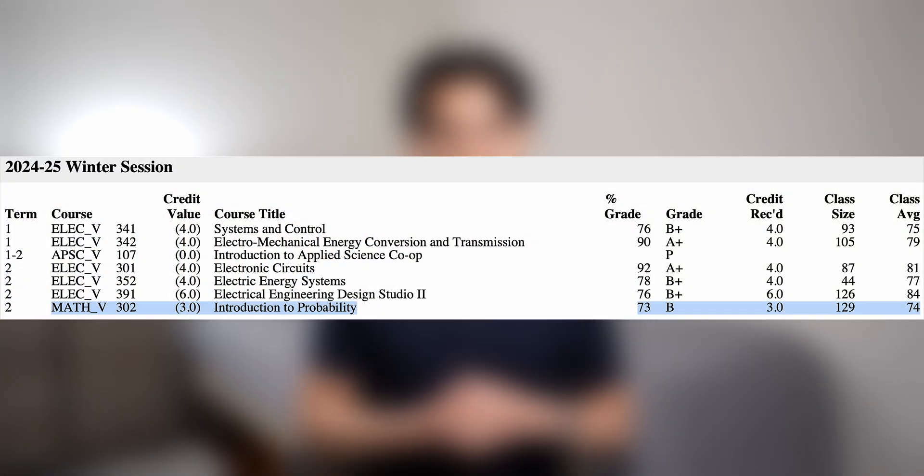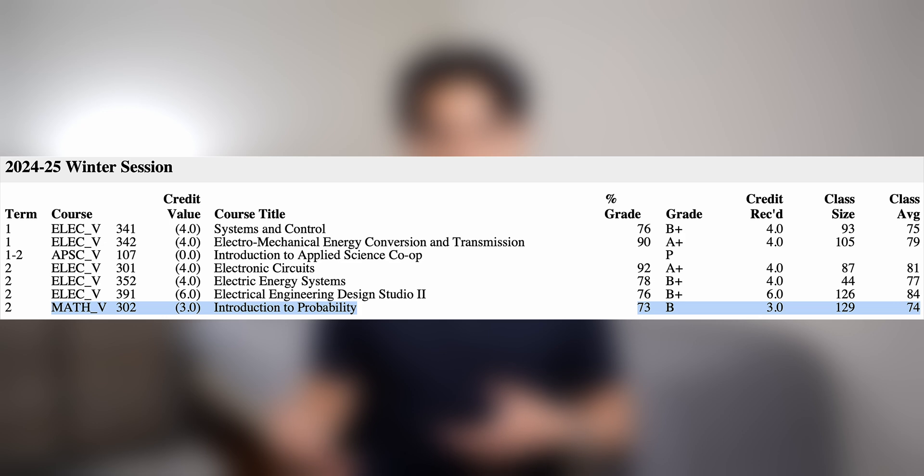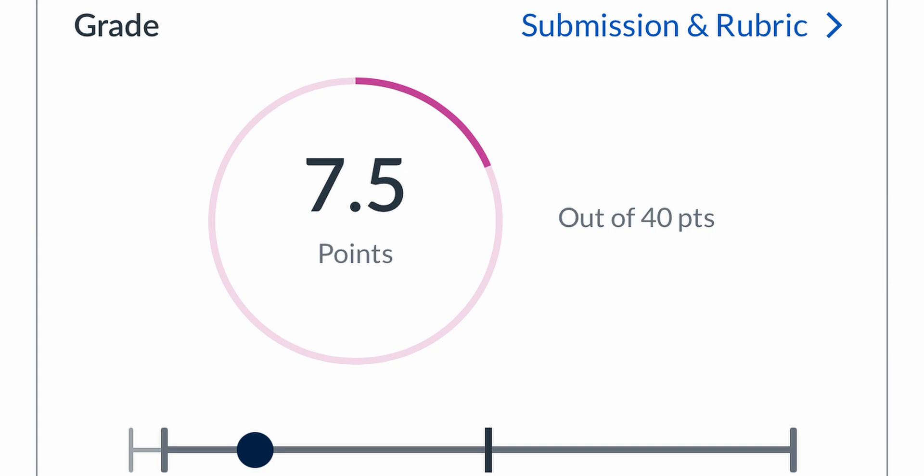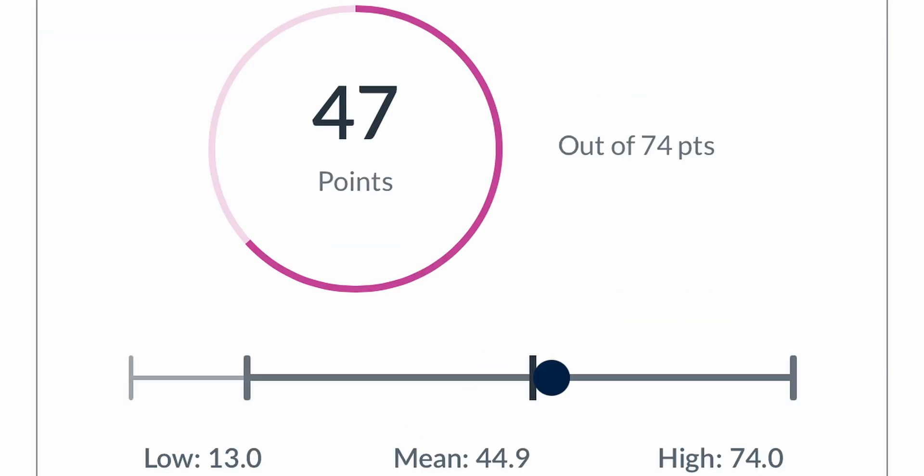For those of you who are curious, I scored a 73% in Math 302 and the class average was 74%. There must have been some crazy scaling done behind the scenes in order to arrive at that grade, because if you remember, I got an 18.75% on my midterm and didn't do too much better than the class average on the final exam. That's pretty much everything you need to know before going into Math 302 — I really hope this video helps you so you don't have to suffer as much as I did in my third year.